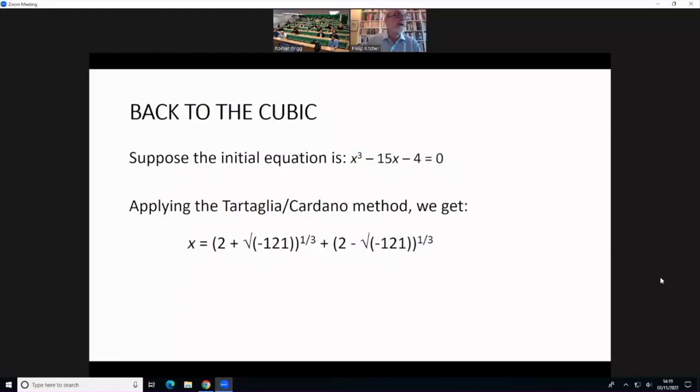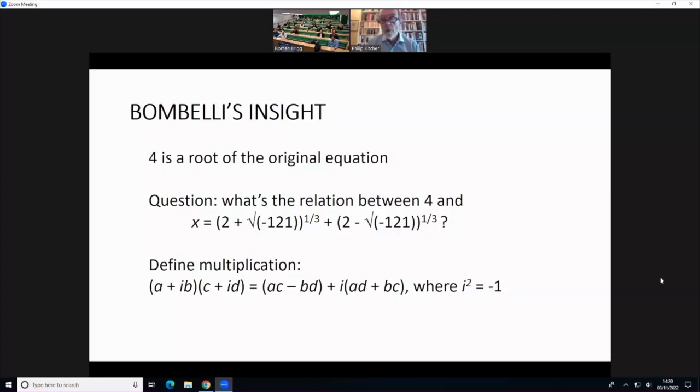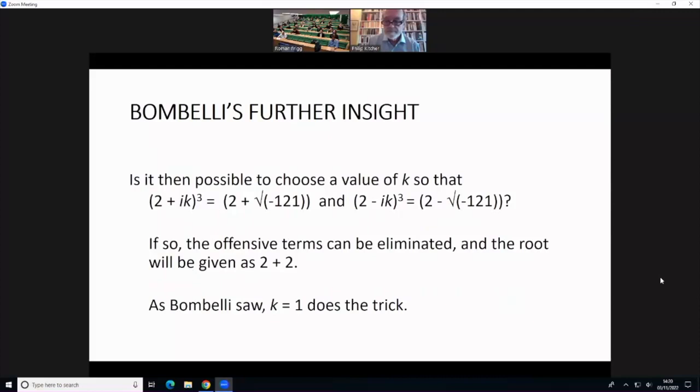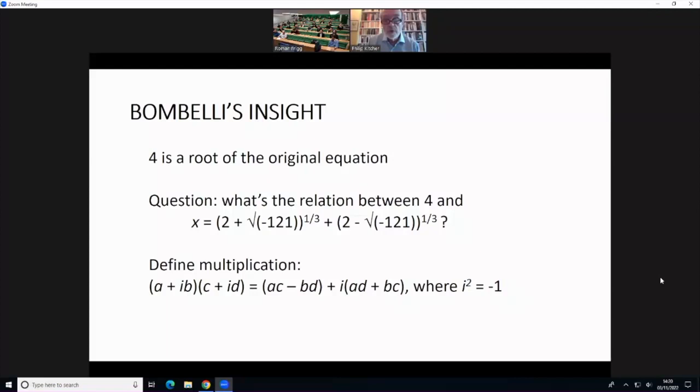So let's pick up one thread in a rich and complex tapestry. Mathematicians quickly discovered that applying the method for cubic equations sometimes results in bizarre designation of the roots. So if you take the initial equation that I've got there, x³ - 15x - 4 = 0, and apply the method, you get something that involves the square roots of negative numbers. But Raffaello Bombelli identified 4 as one of the roots, and so he was inspired to extend the usual application of the standard arithmetic operations to the new notation.